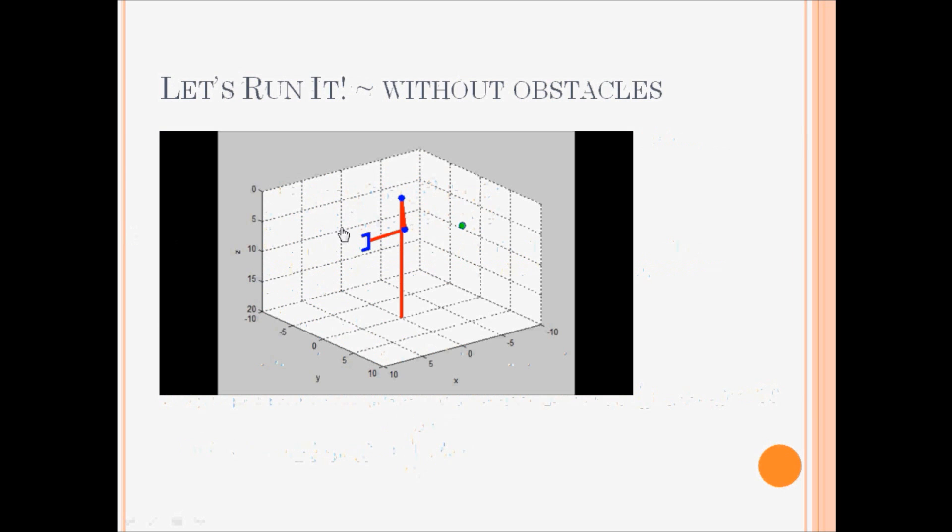So now that we have the trajectory, let's run it. This is the case without the obstacles. It's a trivial case starting from an initial orientation of 0-0 to a final orientation of 190-90. And as you can see, the arm moves straight from the initial path to the final path.